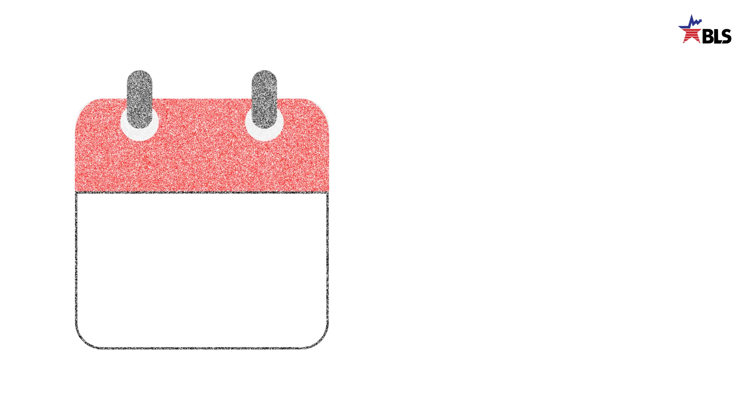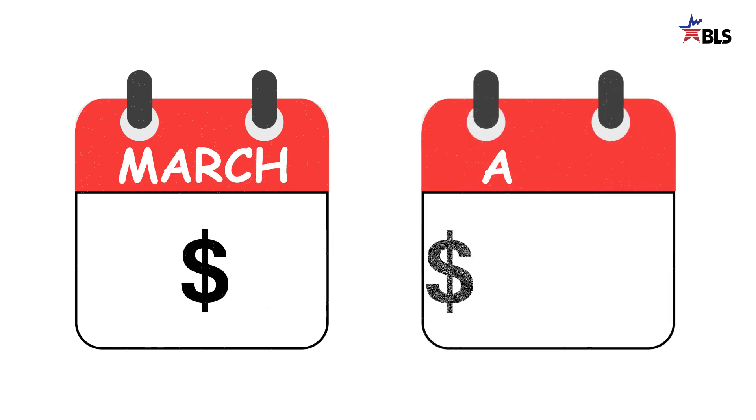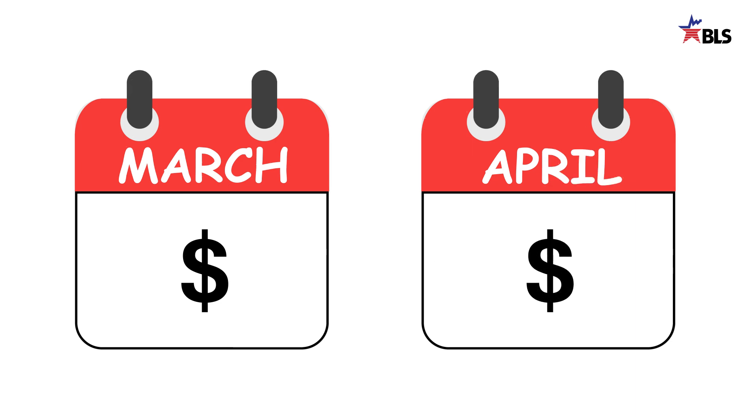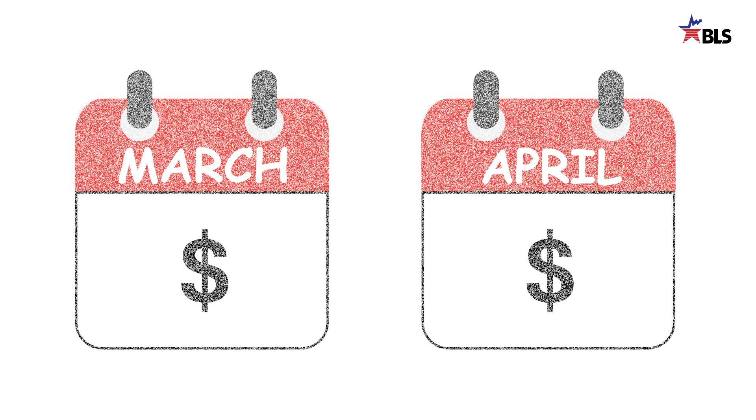The final imputation method is called carry forward. This takes the last collected price for the product or service and carries it forward to the next month. For example, if we could not collect the price of milk across the country, the price of milk at store A in Pittsburgh in the prior month would also be used for the current month. This option is rarely used because our goal is to measure price change, and the carry forward method assumes the price did not change.